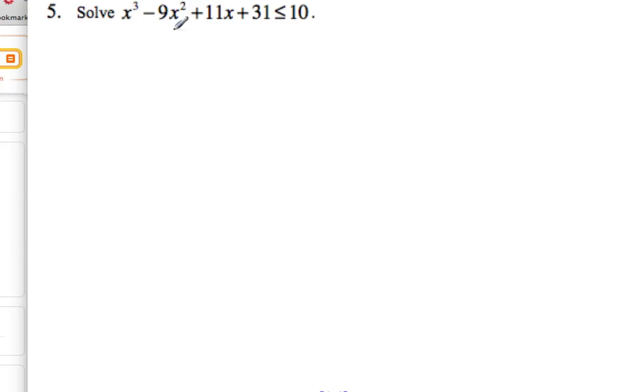Okay, solving now this polynomial inequality, we're going to use a lot of our skills that we know from solving polynomials and skills that we know from inequalities, combine them and find this value. So, in order to do it, let's make this less than 0 first. So I end up with x cubed minus 9x squared plus 11x plus 21 is less than or equal to 0.